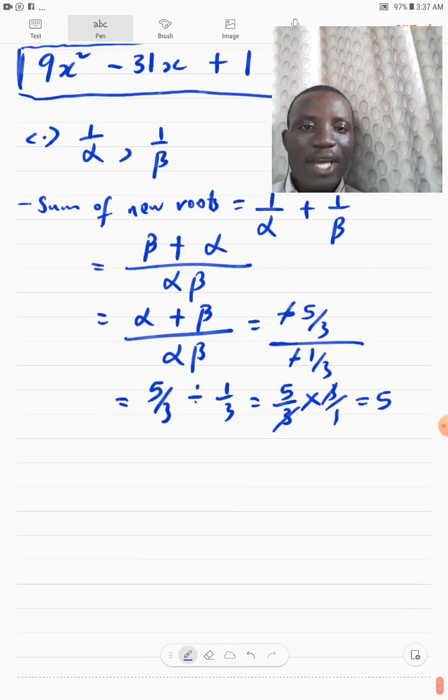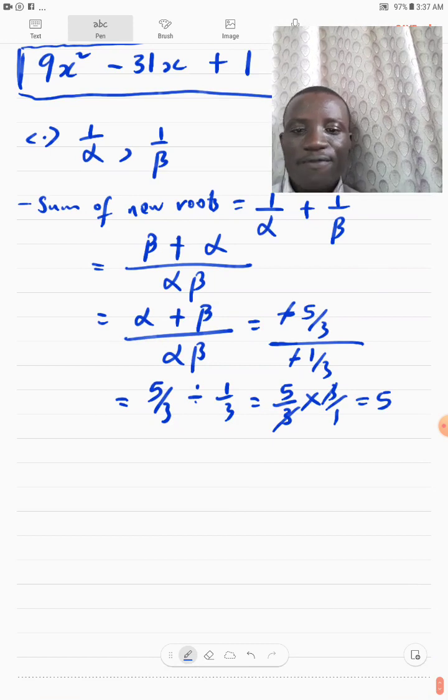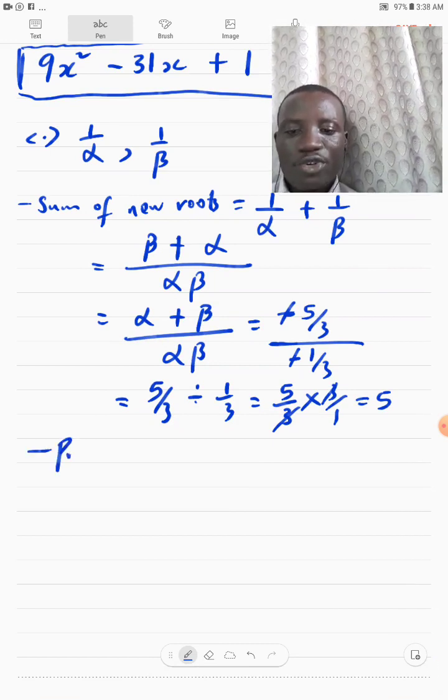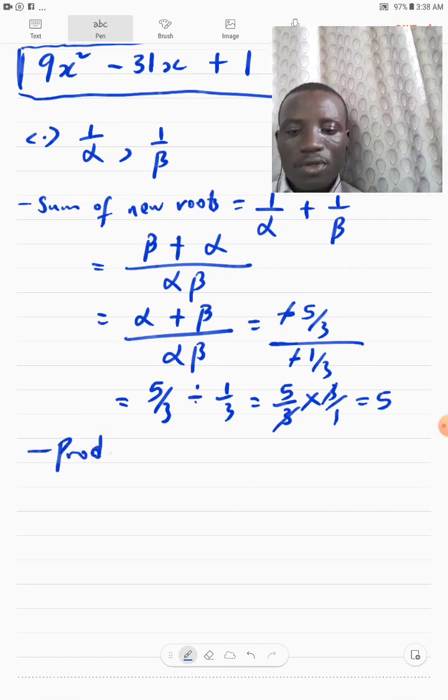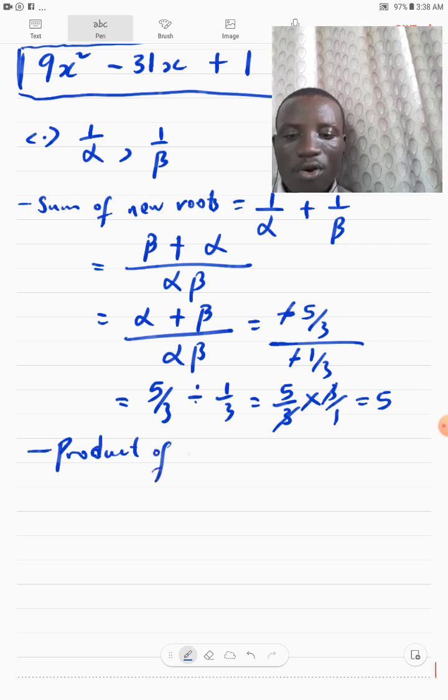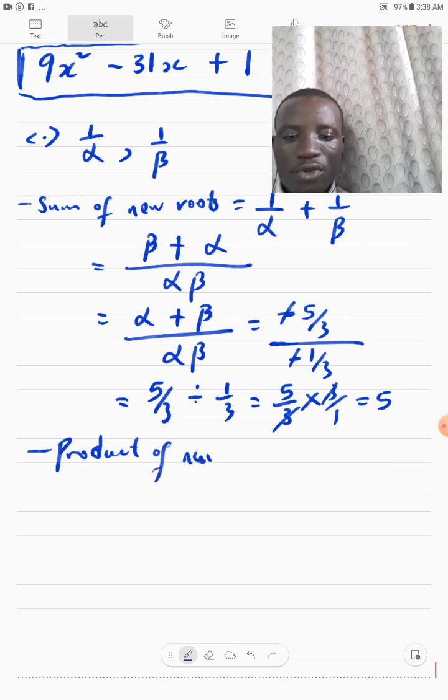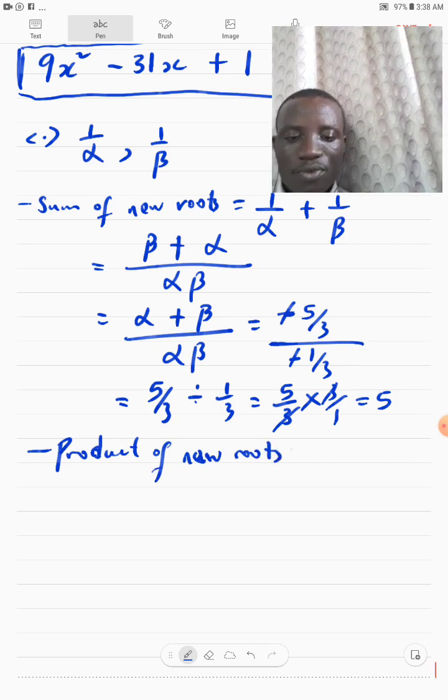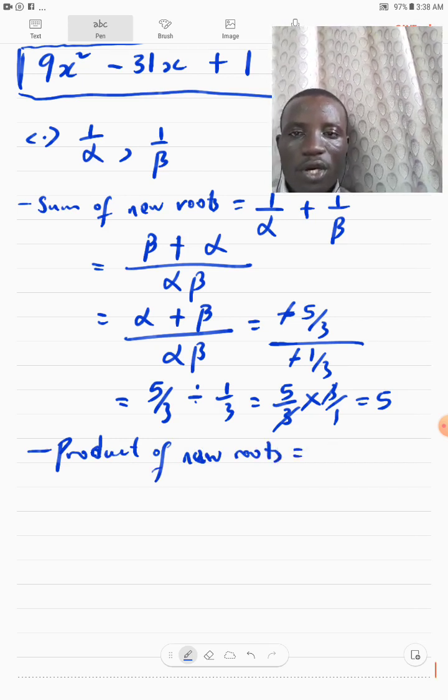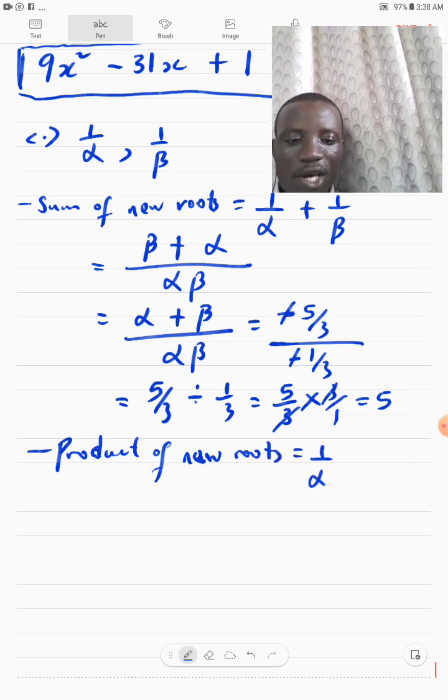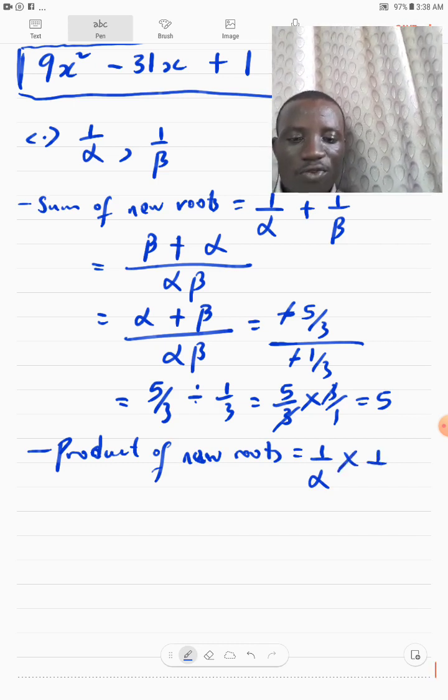So, that will be the sum of my new roots is 5. So, let's find products. Okay. Of new roots.